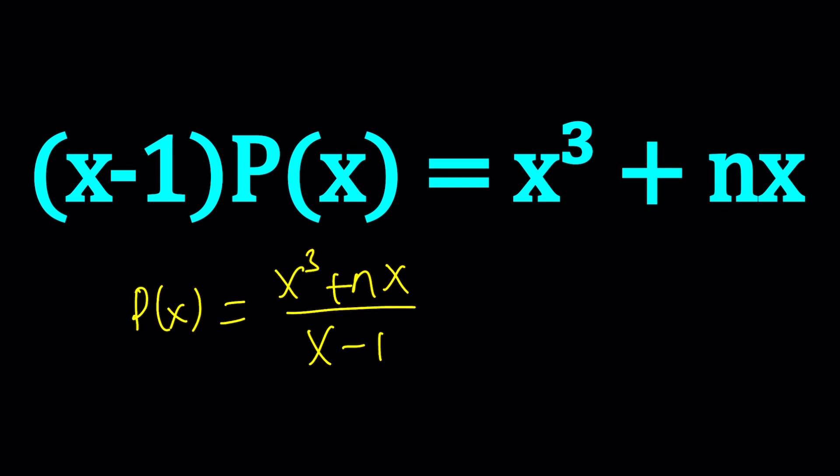I mean, if it's a polynomial, it shouldn't have a denominator. So what is the catch? Well, the thing is, you need to simplify this. But how do you simplify? Maybe we can divide?